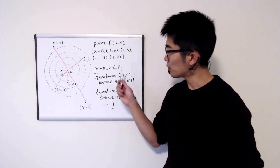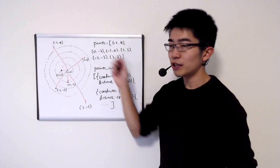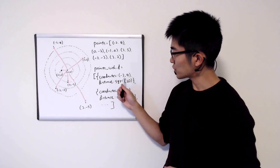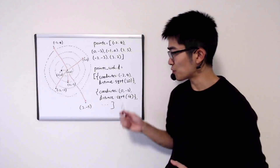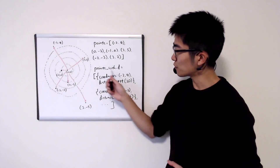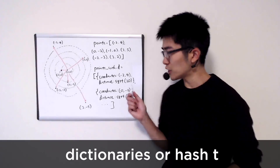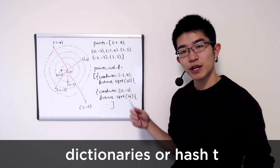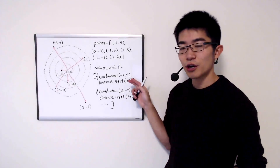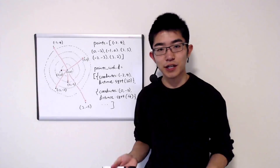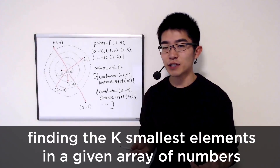I'm calling this new array 'points with d', as in points with distance. The first object will correspond to the first item in the original array, with coordinates minus two, four, and distance square root of twenty. We'll have the same type of object for every other point, so the length of points-with-d will be the same as the original array. You can use dictionaries or hash tables instead of objects as well. Once you have this array, all you need to do is find the k objects with the shortest distance — this problem is now equivalent to finding the k smallest elements in a given array of numbers.